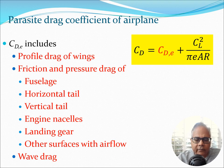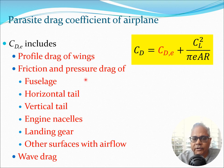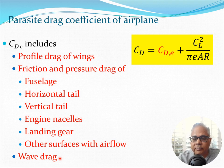There is some difference between this drag polar of the airplane and the drag polar we considered before for the wing, because now there are many more parts of the airplane which also play a role. CDE, the parasite drag coefficient of the airplane, includes the profile drag of the wings, but also friction and pressure drag of the fuselage, horizontal tail, vertical tail, nacelles from which the engines hang, the landing gear, and any other surfaces involving airflow. It also includes any wave drag component encountered at transonic or high speeds.